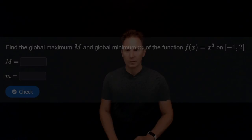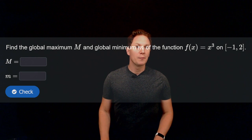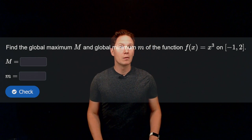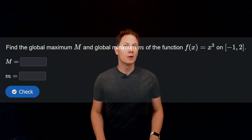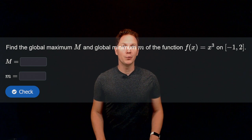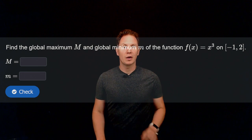Find the global maximum capital M and the global minimum little m of the function f of x equals x cubed on the closed interval between negative 1 and 2. So pause the video and input your answers in the box.